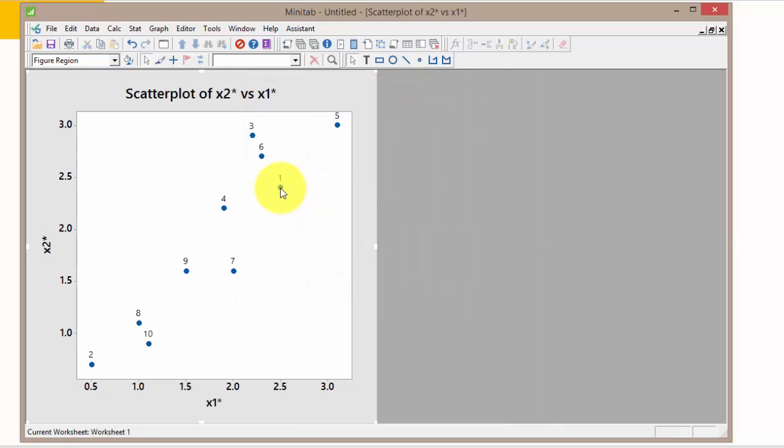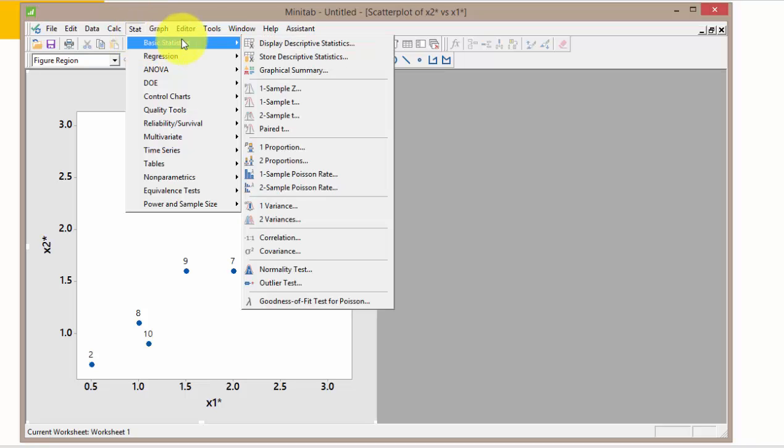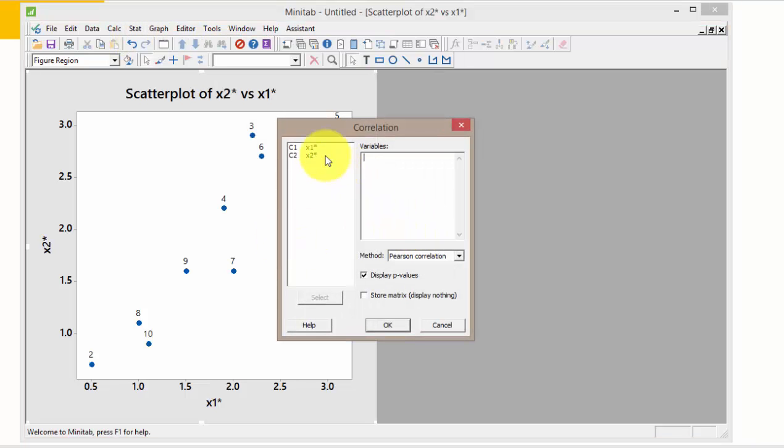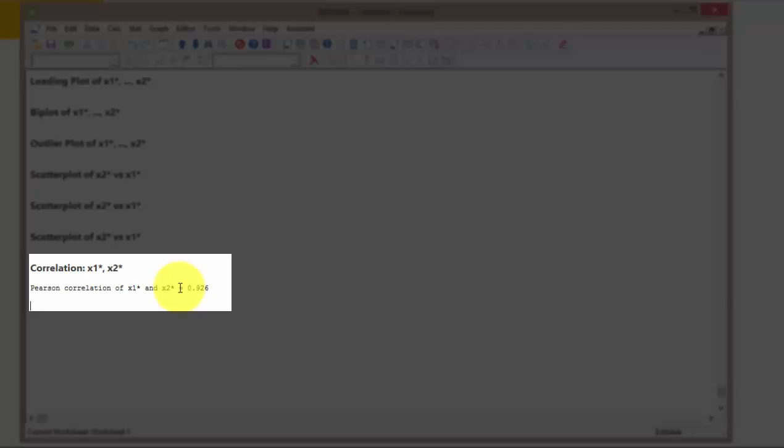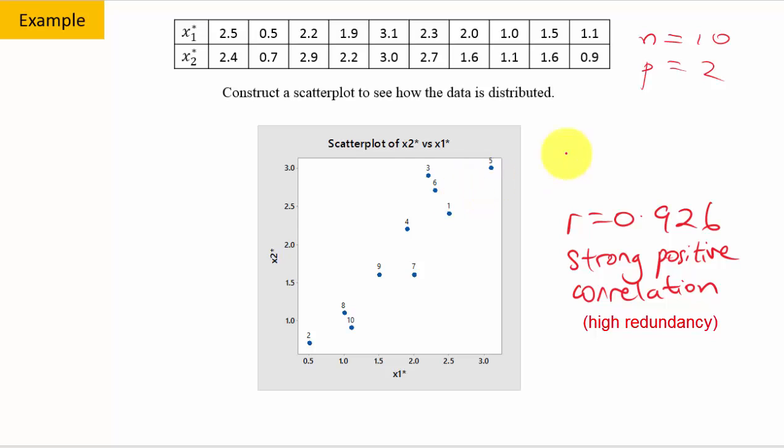So in this scatterplot, I can see that the first data pair is here. The second data pair is here. The third data pair is here. And so on and so forth. Now it seems to me that this data set is positively correlated. Let me first find the correlation. So I'm going to go to stats, basic stats, correlation to find the correlation between x1 star and x2 star. So correlation value is 0.926 which tells me that the bivariate data has a strong positive correlation. So there's a good chance that PCA can help me to reduce this bivariate data to univariate data.